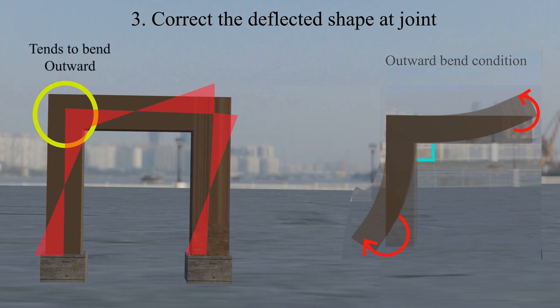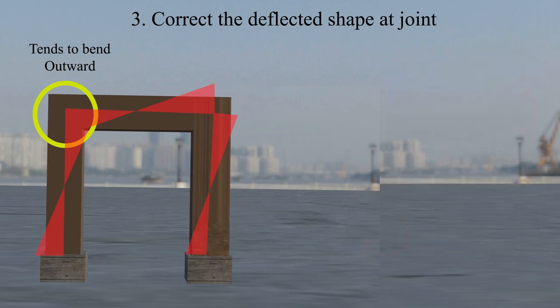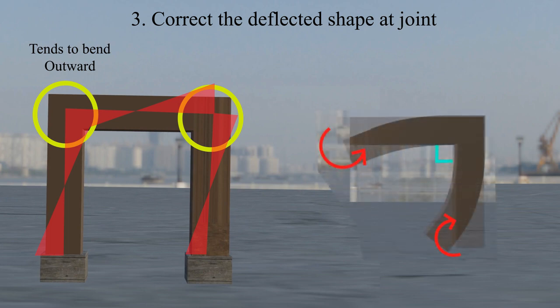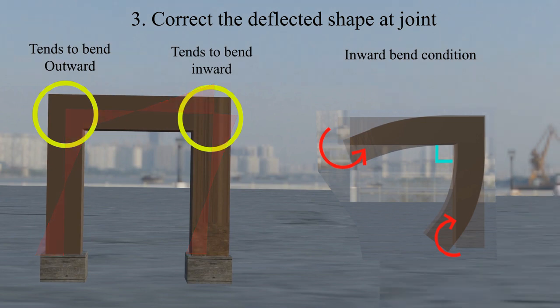And in a similar way, if you see in the right side of the beam column joint, then here in the column portion clockwise moment is generating, and in the beam portion anticlockwise moment is generating. So due to that, this joint is tending to move inward. So due to this result, we can make our deflector shape like this.